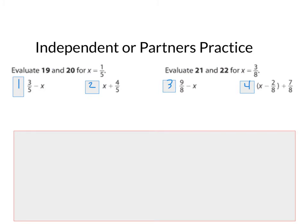So, here's your independent or partner's practice. For these, you are going to evaluate with the x being equal to different numbers. So, we're going to practice substituting. So, three-fifths minus x, that would mean that I substitute. So, the actual problem would be three-fifths minus one-fifth. I saw what x was equal to, and I substituted it in for x. And you're going to do that with each one, except there's different directions for three and four, as indicated that the x will be equal to this.